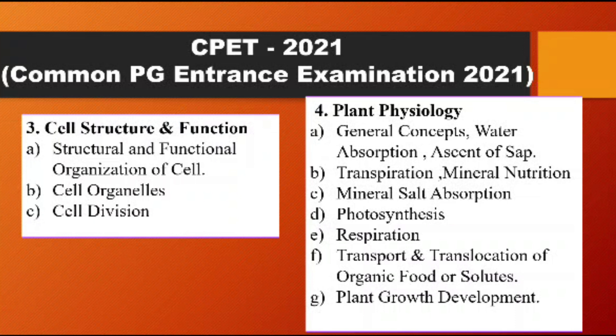In Plant Physiology, point B covers transpiration and mineral nutrition. Transpiration topics include stomata structure, stomata types, and what happens in plants. Mineral nutrition covers micronutrients and macronutrients. Another process to study is guttation. The third point under plant physiology is mineral salt absorption, its mechanism and the factors affecting it.